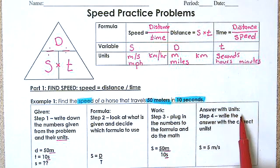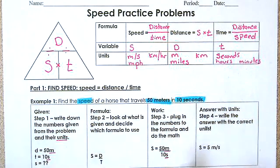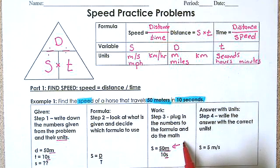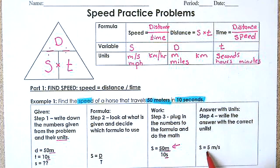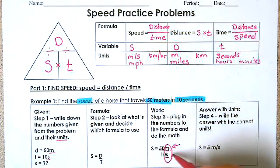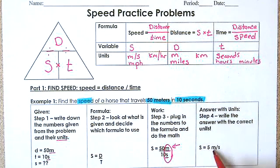The final step is to find the answer with the correct units. 50 divided by 10 — whatever is on top goes in the calculator first — gives us 5. The units come from m divided by s, so the answer is 5 meters per second.